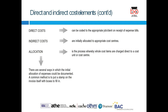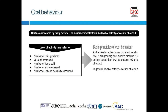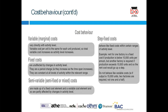Cost behavior is crucial for decision making in health and social care or any business. Cost is either fixed or variable. Variable cost changes with the level of output. Fixed cost stays the same regardless of the level of activity. Think about a nursing home with 100 beds — whether there are 50 patients or 60 patients, the rent stays the same. That's your fixed cost.